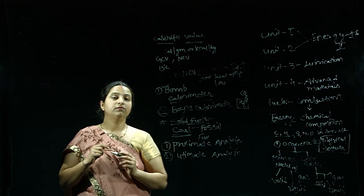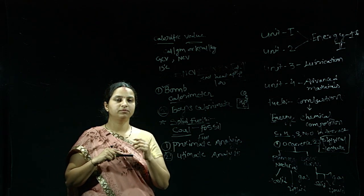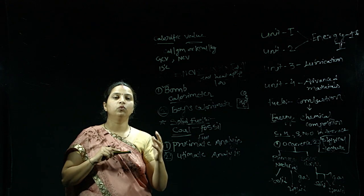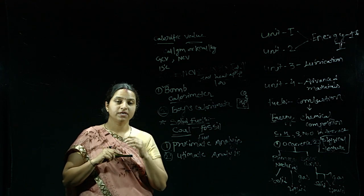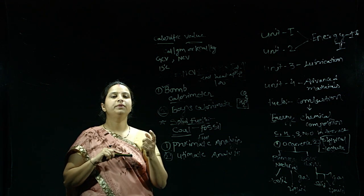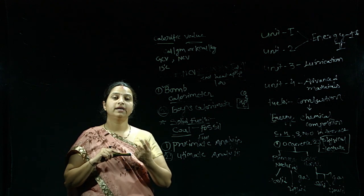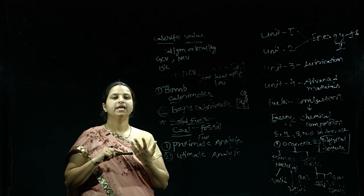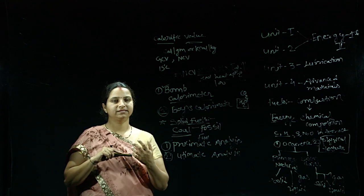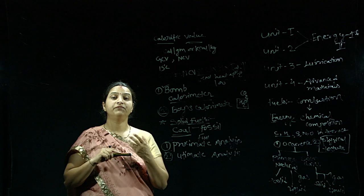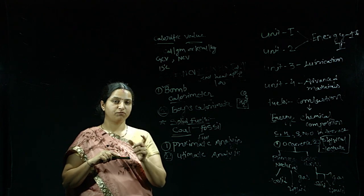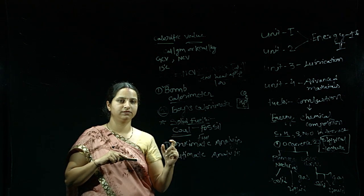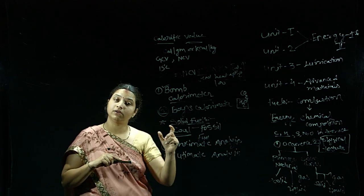In proximate analysis — the percentage of moisture, volatile matter, and ash content — to conclude a good quality coal, these percentages should be less. If they are present in more percentage, it will affect the calorific value negatively. So the percentage of moisture, volatile matter, and ash content should be very less for good quality coal.